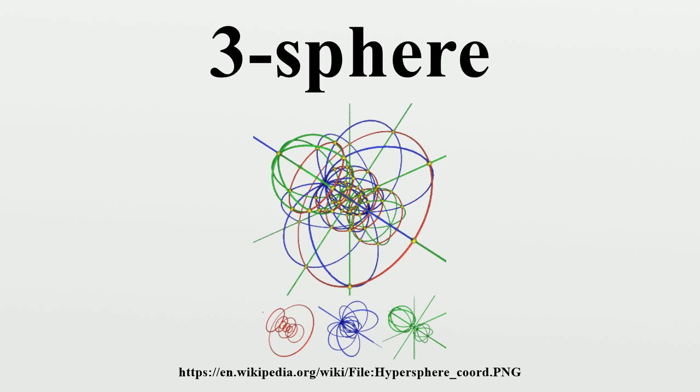By using a matrix representation of the quaternions, one obtains a matrix representation of S3. One convenient choice is given by the Pauli matrices. This map gives an injective algebra homomorphism from H to the set of 2×2 complex matrices. It has the property that the absolute value of a quaternion q is equal to the square root of the determinant of the matrix image of q. The set of unit quaternions is then given by matrices of the above form with unit determinant. This matrix subgroup is precisely the special unitary group SU(2).